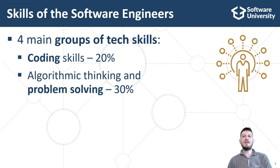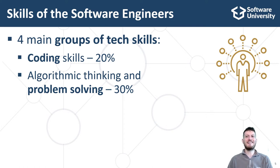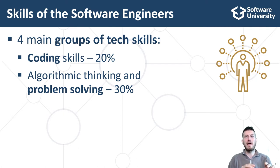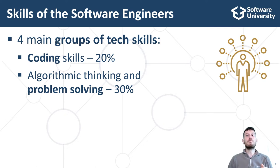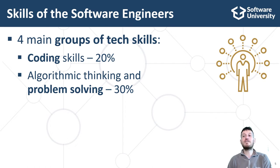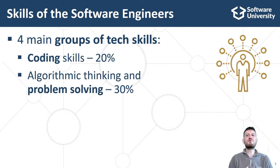The second essential skill is algorithmic thinking and problem solving, which forms 30% of the developer's skills. Algorithmic thinking is a way of getting to a solution through the clear definition of the steps needed. It includes the ability to break the problem into a logical sequence of steps called an algorithm, to find a solution for every separate step or break it further into sub-steps, and then assemble these steps into a working solution. Algorithmic thinking is similar to logical thinking, engineering thinking, mathematical thinking, and abstract thinking.